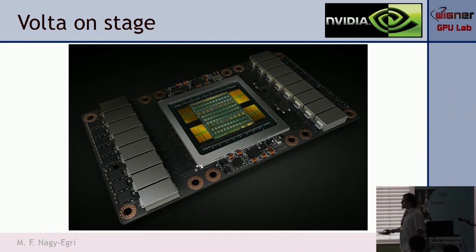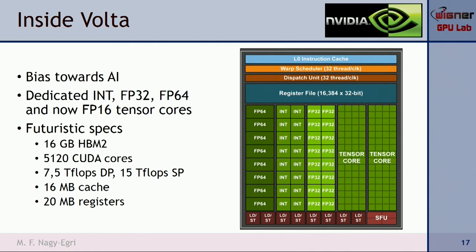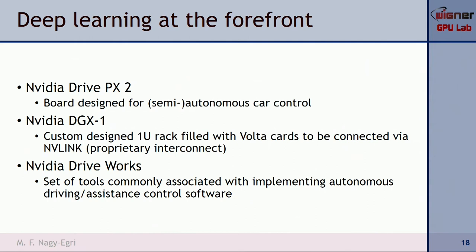At this year's GTC, NVIDIA Volta was introduced as the successor to the Pascal product line. The Volta architecture has futuristic specs and is heavily biased towards AI, with dedicated integer, single precision, double precision, and half precision cores — dubbed tensor cores — explicitly designed for neural network training. The specs include 7.5 teraflops double precision and 16 megabytes of cache, which is impressive.